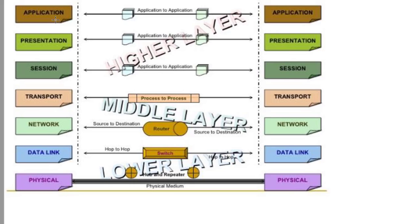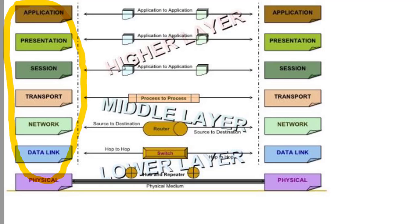The first layer is Application, then Presentation. This is your computer — it has 7 layers: Application, Presentation, Session, Transport, Network, Data Link, and Physical.